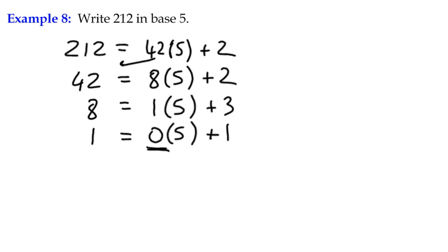So we can say here that 212 to the base 10 is equal to 1, 3, 2, 2 from the bottom up: 1, 3, 2, 2 to the base 5. It's as simple as that. I like it.